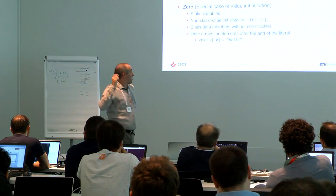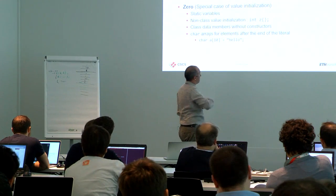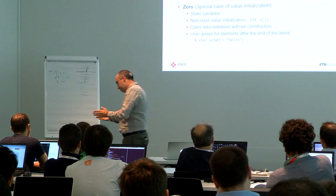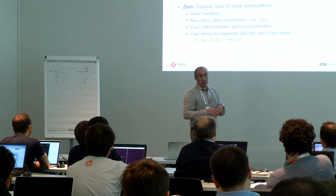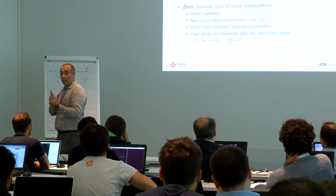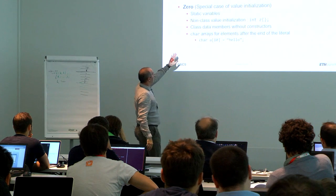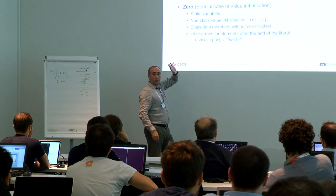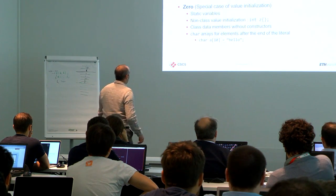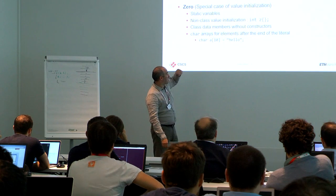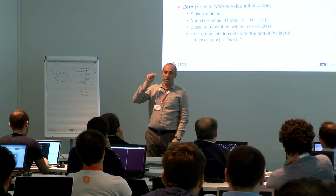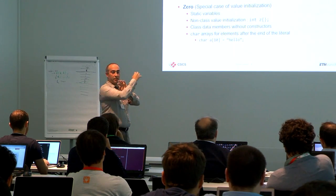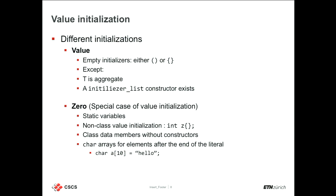There is another thing called value initialization — when you use empty curly braces or empty parentheses to initialize an object. It calls the default constructor. In the case of an integer, it will perform zero initialization. Arithmetic types — float, double, char, and others — will be zero-initialized. So you can write int z{} and that will initialize to zero. The rule is that it takes integer zero and casts it to the type. So after that, z will be zero.